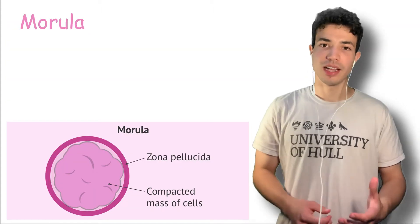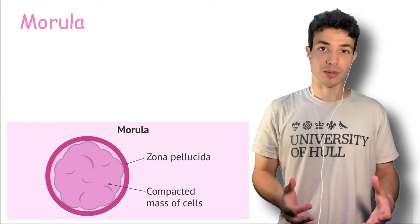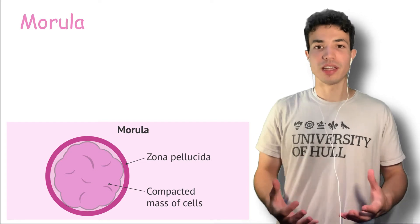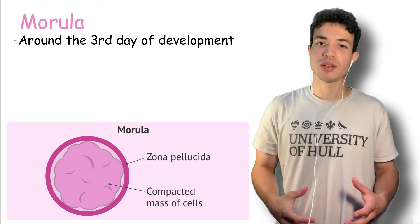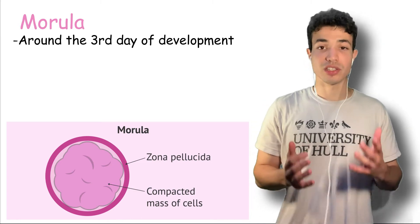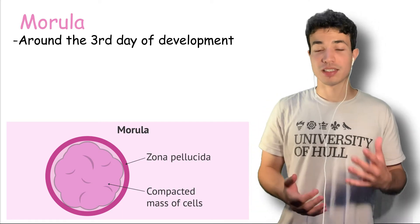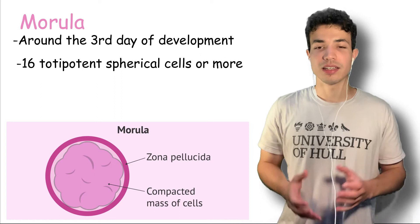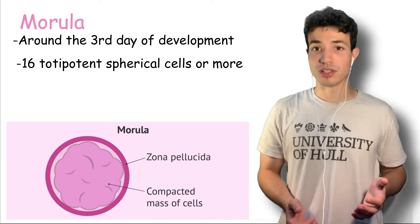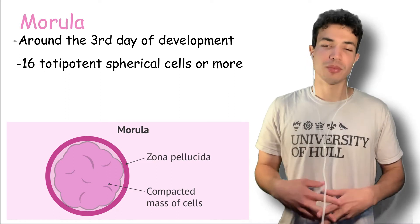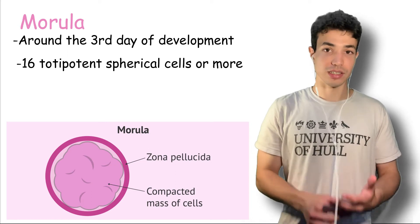There are some important names from the previous picture. The first one is the morula. The morula stage happens around the third day of development, and that's when we can't really see the divisions between each individual cell. At that stage the embryo has 16 cells or more. An important characteristic of the morula is that all the cells are totipotent, meaning they can become any cell in your body — they haven't undergone differentiation yet.